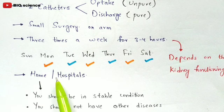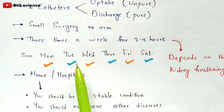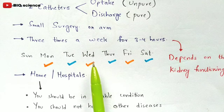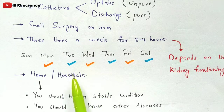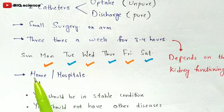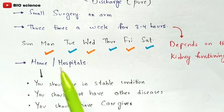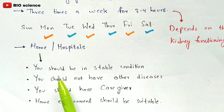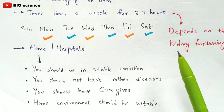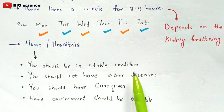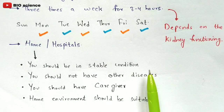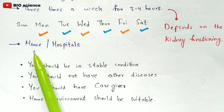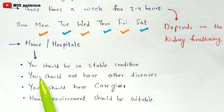The IHD process can be done at home or in hospitals, but going to the hospital is recommended. If done at home, the patient must be in a stable condition — stable temperature and stable blood pressure.